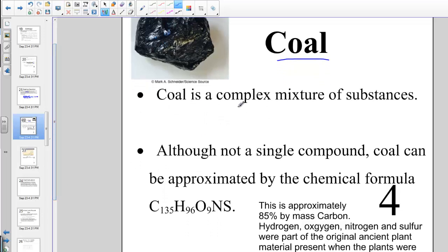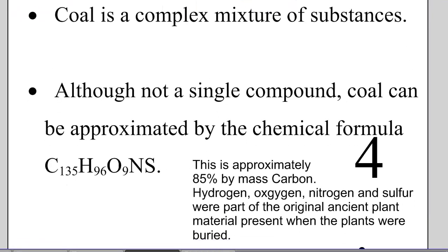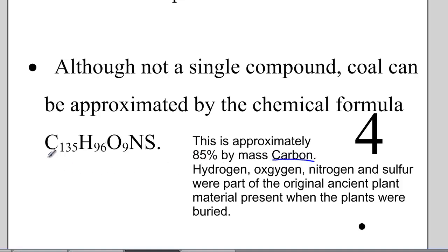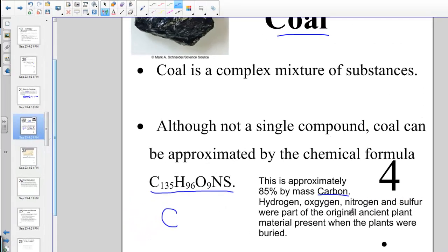Coal is a complex mixture of substances, but essentially about 85% by mass carbon. Its chemical formula is C₁₃₅H₉₆O₉NS. That 85% by mass is just carbon, with hydrogen, oxygen, nitrogen, and sulfur — all part of the original ancient plant material as it fossilized over millions of years. Coal is considered a non-renewable resource simply because it takes so long to regenerate from organic plant material.